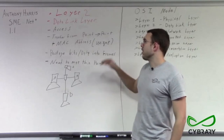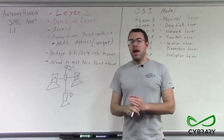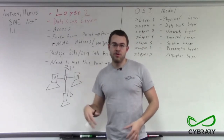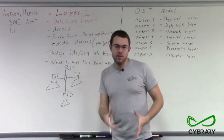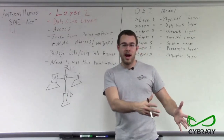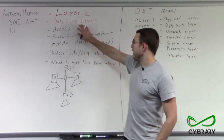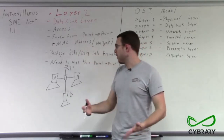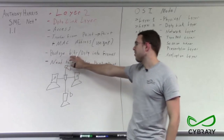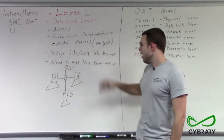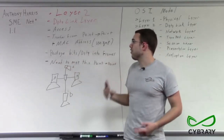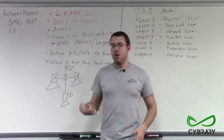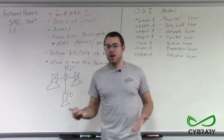Think of our layer two data link layer as a truck driving down our street with a package — it's the act of handing off the box to our particular house on the street. All we're really doing at this data link layer is getting data from one point to another, providing that packaging of data and bits into frames. When you think about layer two, think about access, hubs, layer two switches, or MAC addresses — that's going to be at our layer two.